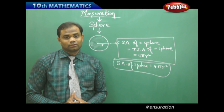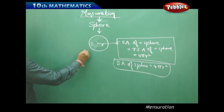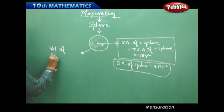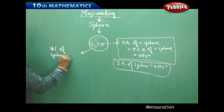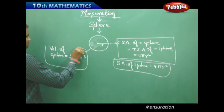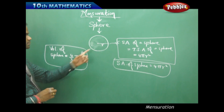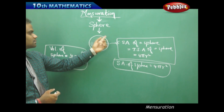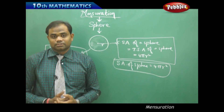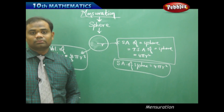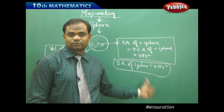Next comes the volume. The volume of the sphere is given by (4/3)πr³, where r is the radius of the sphere — the distance from the center to any point on the surface. This gives us the surface area and volume of the sphere using their respective formulas.